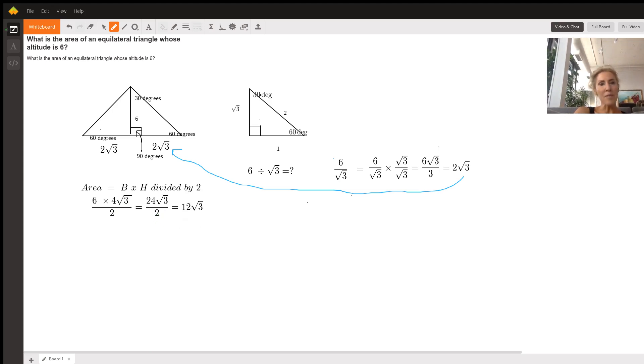So the area of this equilateral triangle whose altitude is six is 12 radical three. That's a lot of radicals. Hope it helps, bye!